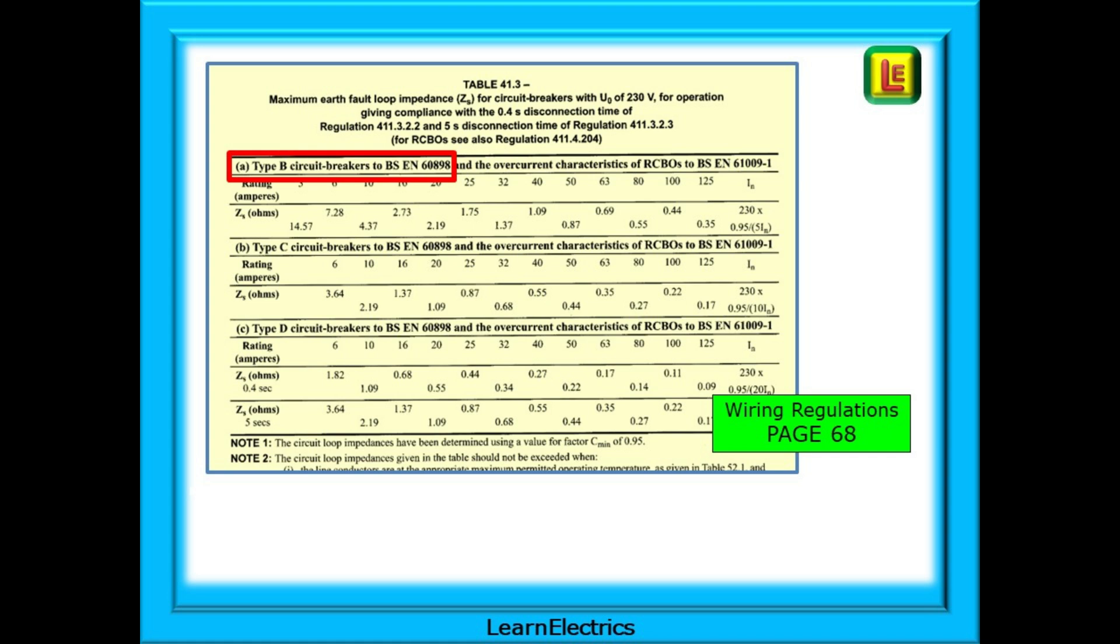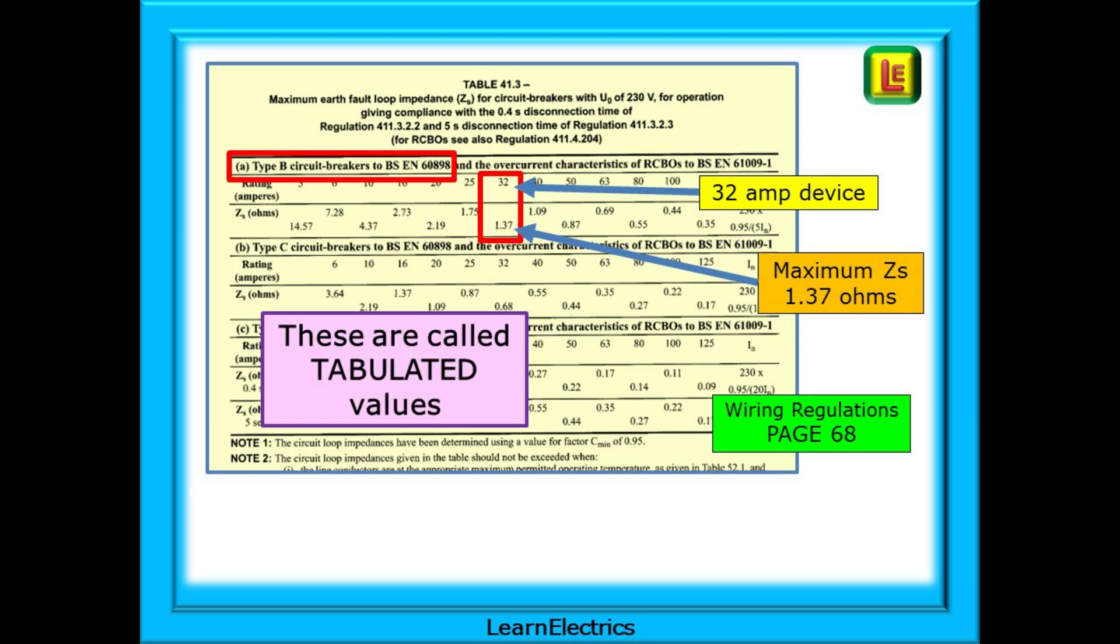Found the correct section for type B devices as highlighted in red here. Now find 32 amps and immediately below it is the maximum ZS value, which in our example is 1.37 ohms. These are called tabulated values. They've come from tables of ZS values in the regs book. Tabulated. It's important that you remember this.